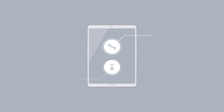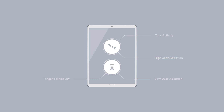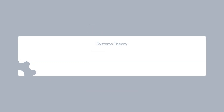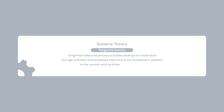A second key systems theory insight is understanding the difference between core and tangential activities. It's a critical mechanism for predicting how much resistance there will be in using the system. Tangential data and process activities attempt to create data through activities and processes that have to be completed in addition to the normal work activities of an individual — it's something you have to do extra.